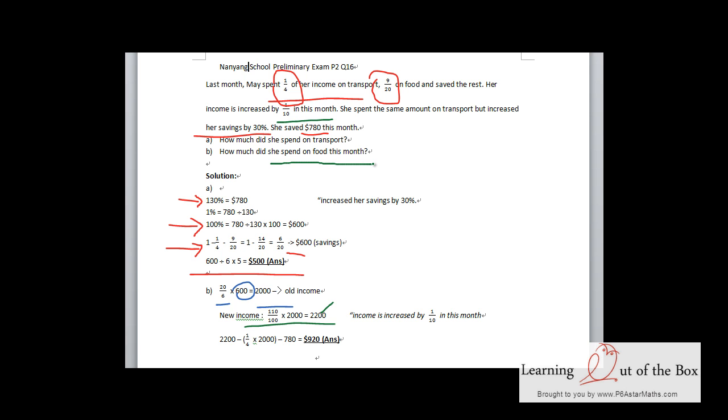How much did she spend on food? Since $780 is savings and she spent the same amount on transport, which is the same as before, we can calculate the food spending from the new income.